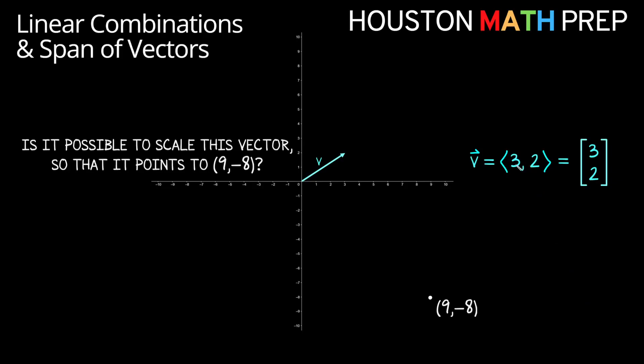I've got a vector v, which is the vector 3 comma 2. I've also written it in its column vector form, and I've graphed it in R2 as well. Our question asks: is it possible to scale this vector so that it points to the point 9 comma negative 8? Remember that scaling a vector is like stretching it or shrinking it, but it should still have the same direction, or the exact opposite direction, once we scale it.